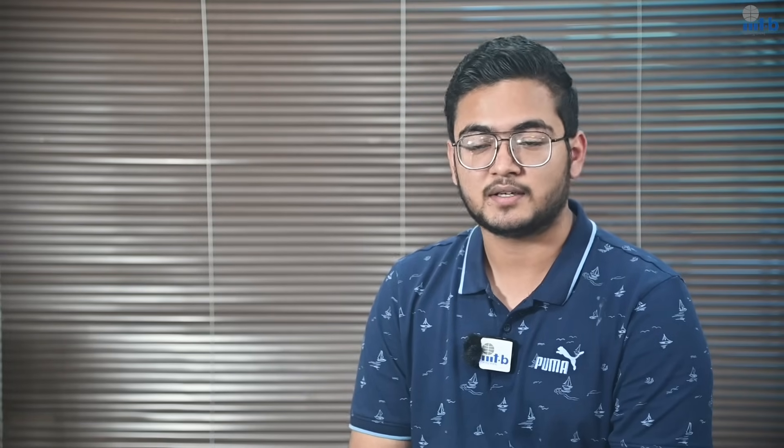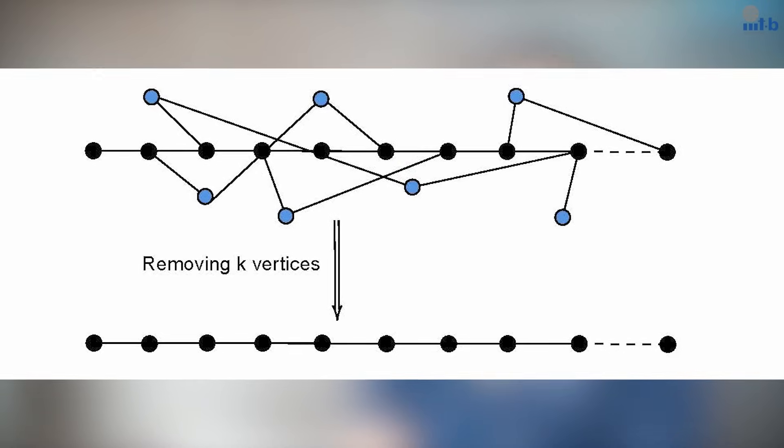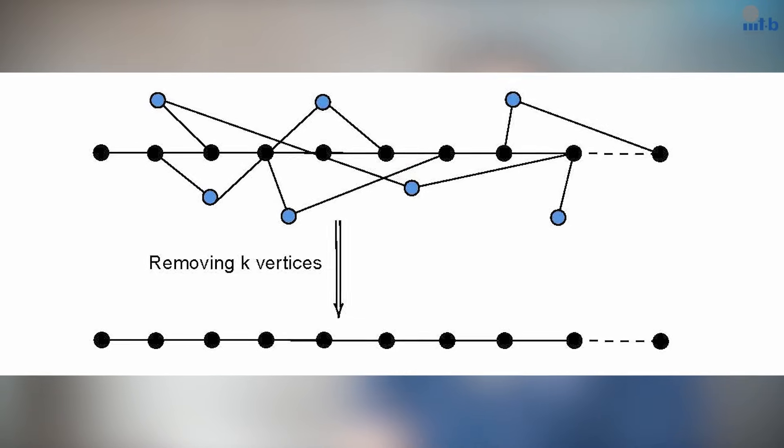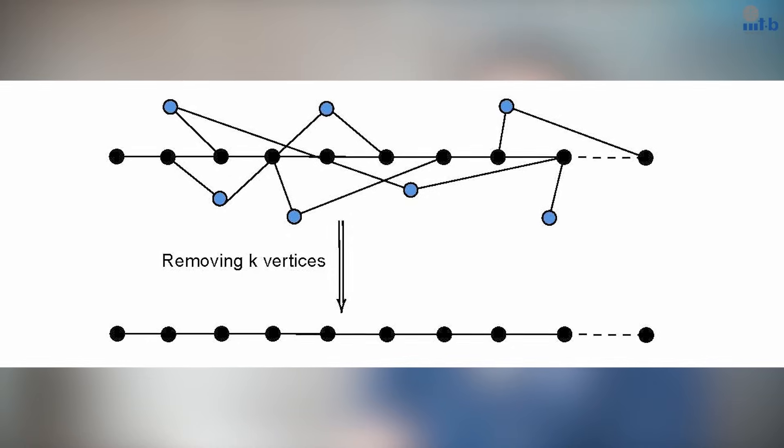Next, we consider two graph classes where graph burning is trivially solvable. The first class is paths. We consider graphs such that if we delete K nodes from the graph, we get a path. Here, we design FPT algorithms parameterized by K and burning number. Further, we show that when K is 1, we can perform some preprocessing in polynomial time so that the size of the input graph is reduced considerably.